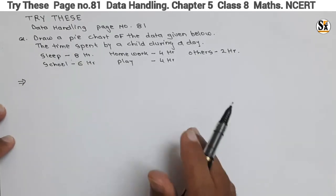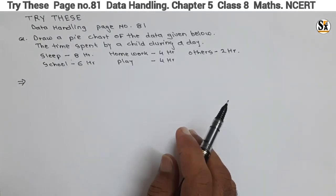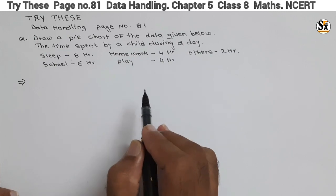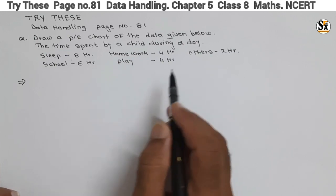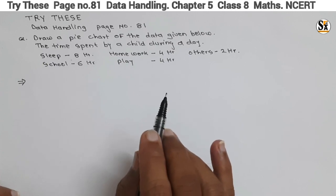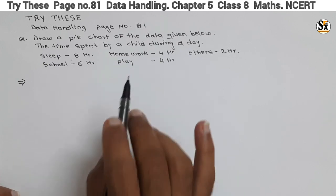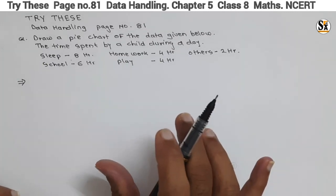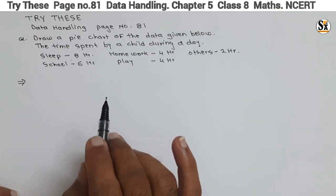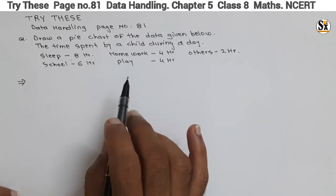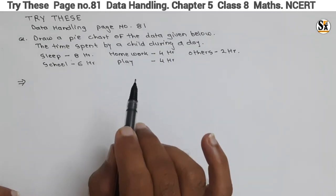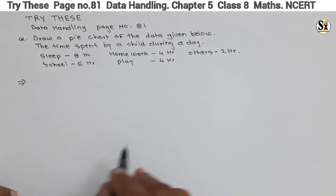First, let's see what is a pie chart. When data is represented in a circular form, it is called a pie chart — that is, a circular graph. When we have data and we represent it in a circular form, that figure is called a pie chart. It shows the relation between the whole and its parts.